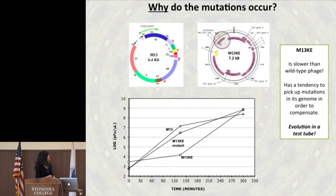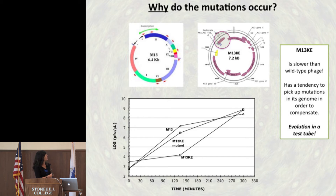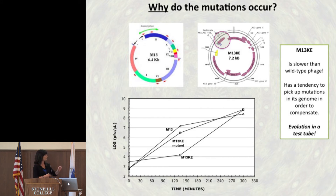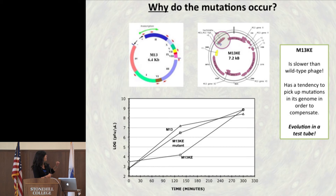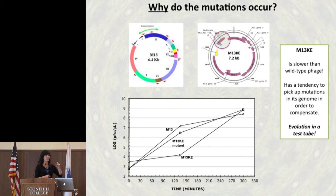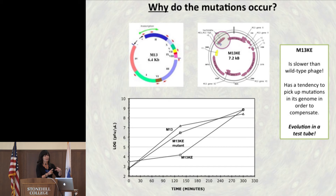Now why do the mutations occur? The original phage discovered in the sewers was called M13. The one we actually use in the lab is a version that molecular biologists modified to be useful for certain types of experiments — they added a big piece right here to the genome.